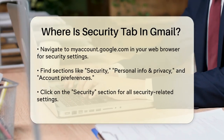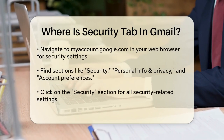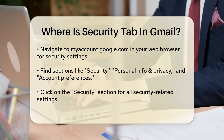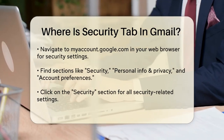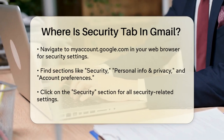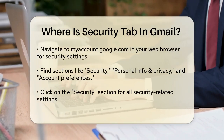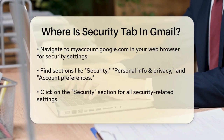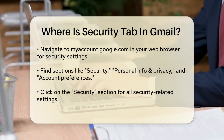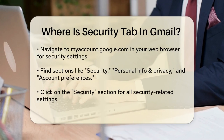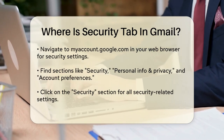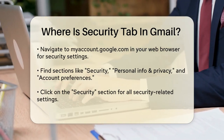To access the security settings, you need to go to a different part of your Google account. Navigate to myaccount.google.com in your web browser. Here, you'll see several sections including Security, Personal Info & Privacy, and Account Preferences. Click on the Security section — this is where you'll find all the security-related settings for your Google account, including your Gmail.